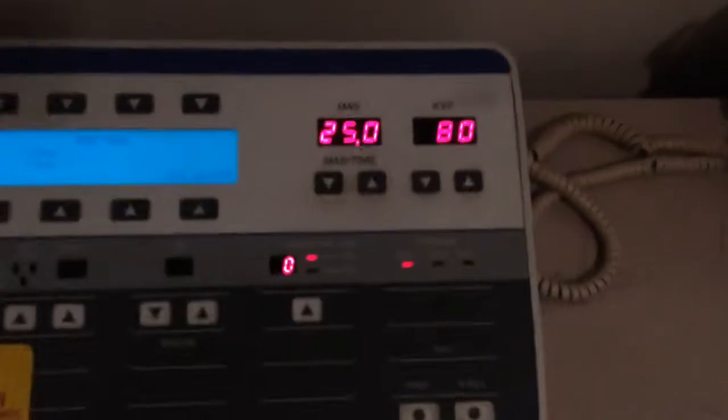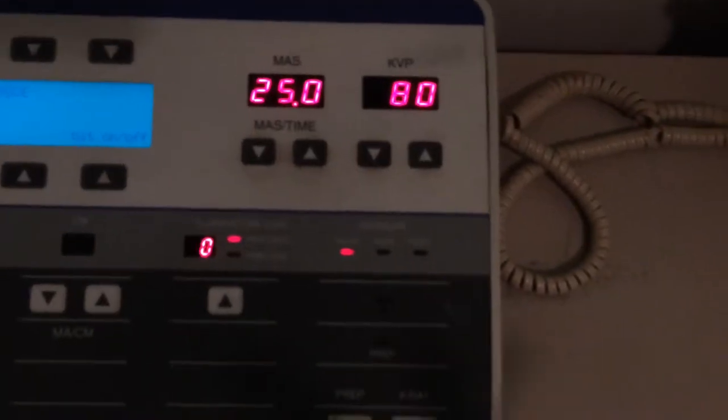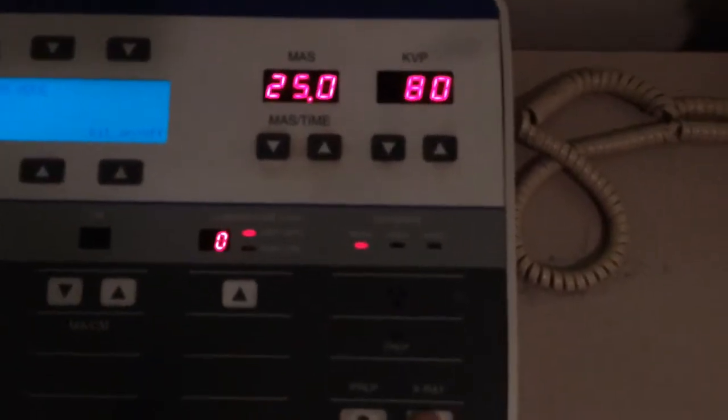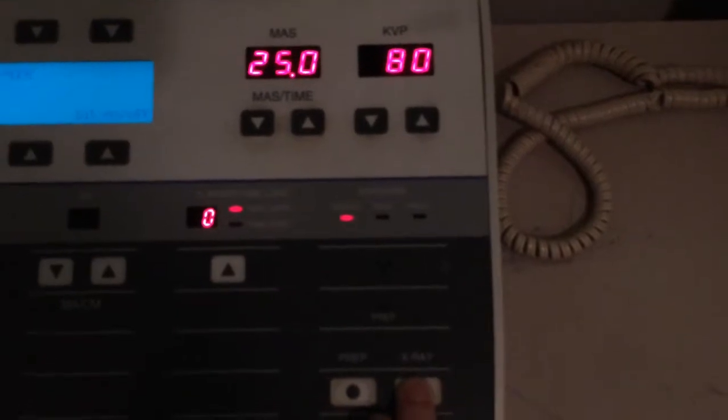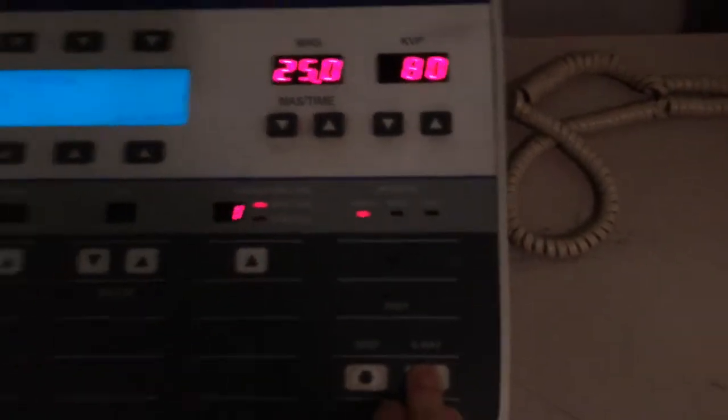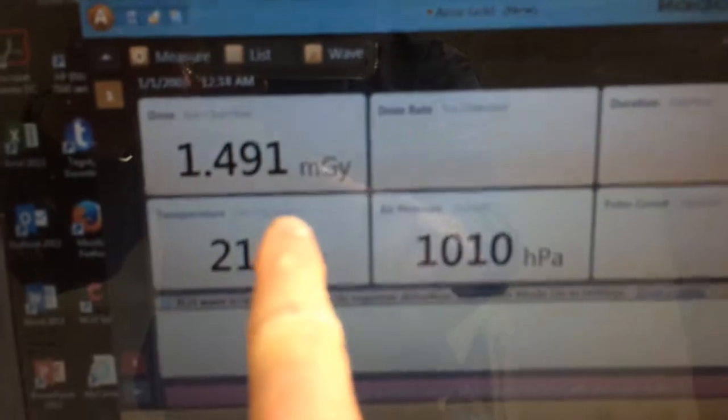To start the game rolling, we'll go into the lab and make an exposure. The technique that I'm going to use is just 25 mAs at 80 kVp. It'll be the same technique every single time. Let's go out there and see what we got. Over here, I've got an exposure amount measured in milligray.